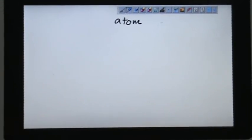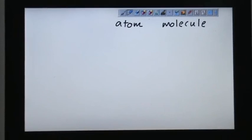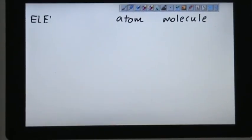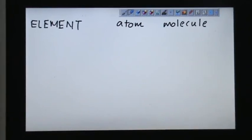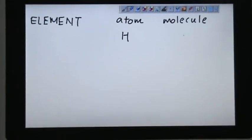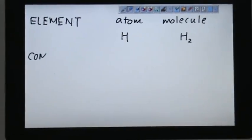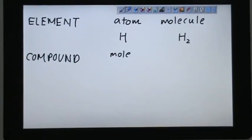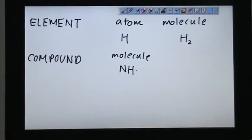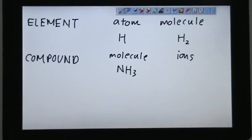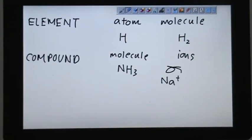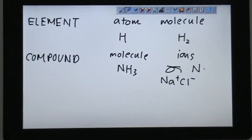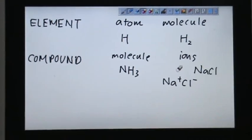As a conclusion, we have atom and molecule of the same element, same type. So example would be H and here example would be H2. Compound, we have examples. It could be the molecule like NH3. It could be ions such as Na plus and Cl negative combined together. We can write NaCl. So these are the difference between element and compound.